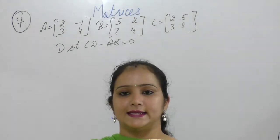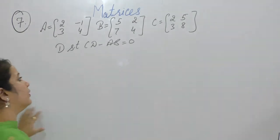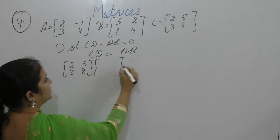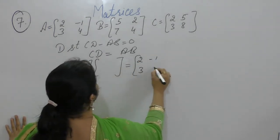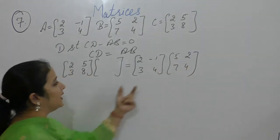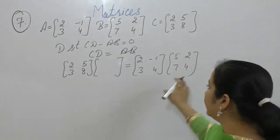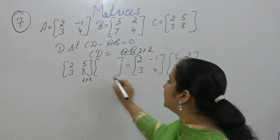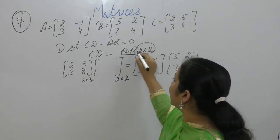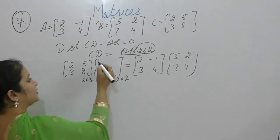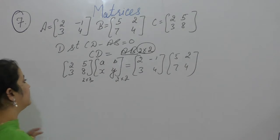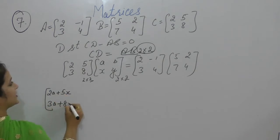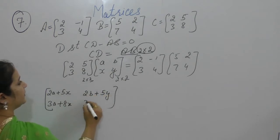We want to find matrix D such that CD = AB. C is [[2, 5], [3, 8]] times D equals AB. Since A is of order 2×2 and B is 2×2, the resultant matrix AB will be of order 2×2. Here C is of order 2×2, so D should also be of order 2×2. Let D = [[a, b], [x, y]]. Then CD gives: [[2a+5x, 2b+5y], [3a+8x, 3b+8y]].